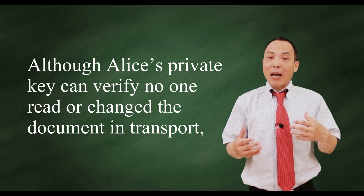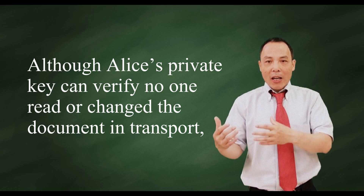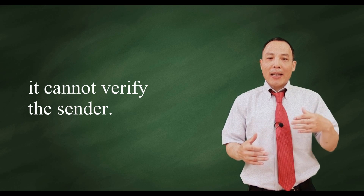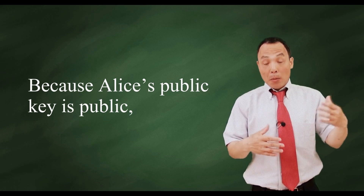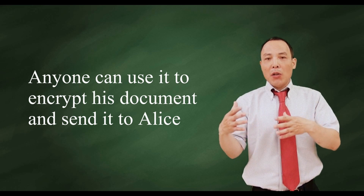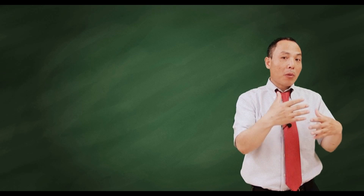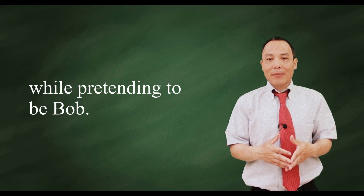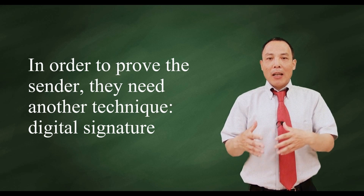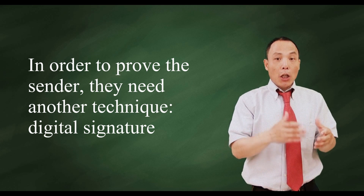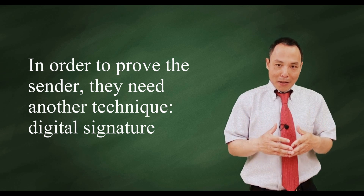Although Alice's private key can verify no one read or changed the document in transport, it cannot verify the sender. Because Alice's public key is public, anyone can use it to encrypt a document and send it to Alice while pretending to be Bob. In order to prove the sender, they need another technique — digital signature — which is another story in another video.